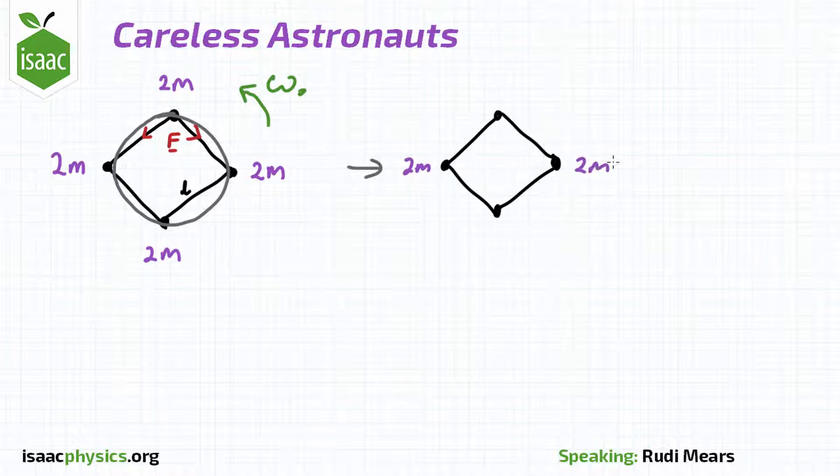Now initially, the centripetal force is equal to 2m omega nought squared r, where r is the distance of each astronaut from the centre of mass. In the instant after the tools are dropped, the rotation speed will still be the same, and the centripetal force will still be 2m omega nought squared r.